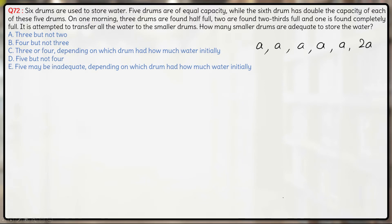One morning, 3 drums are found to be half full, 2 are found to be 2/3 full, and 1 is found to be completely full. It is attempted to transfer all the water to the smaller drums. How many smaller drums are adequate to store the water?